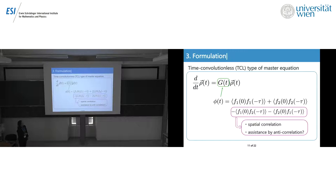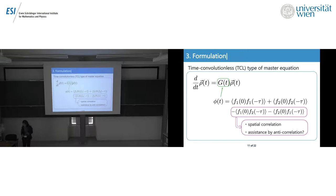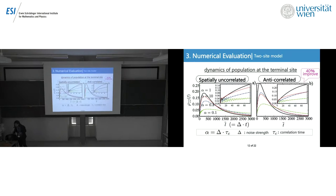The cross-correlation function has a negative sign. So if this correlation has anti-correlation and the correlation function is negative, totally this becomes positive, and it accelerates the decay of the relevant system. That is the analytic explanation of the acceleration of energy transport by anti-spatially correlated noise. Now let me show you the numerical evaluation of this model.